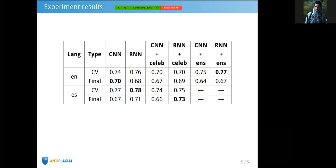Here we have CNN, RNN, CNN or RNN with the additional feature of whether a token corresponds to celebrity, and CNN or RNN with the ensemble. Dashes mean that we didn't conduct any experiments in this setting.